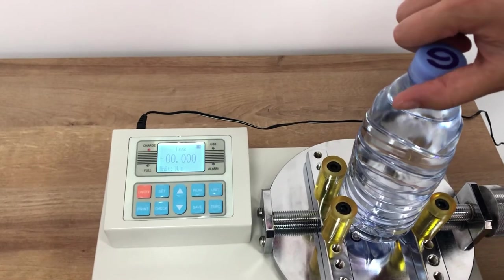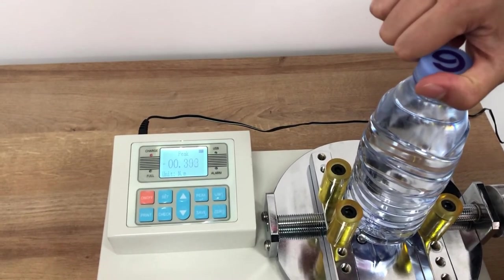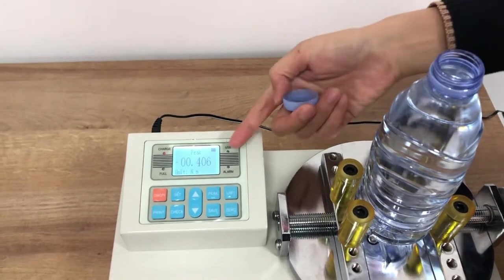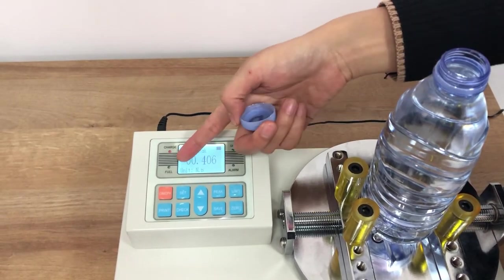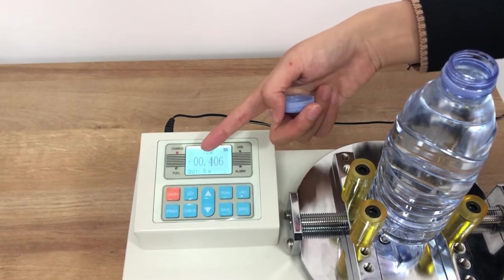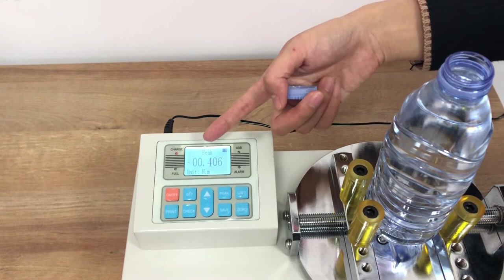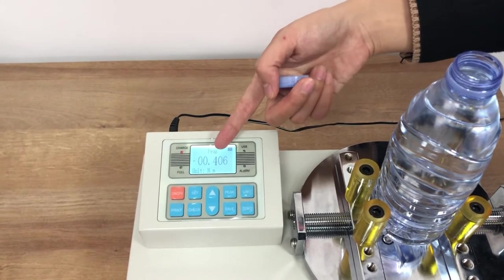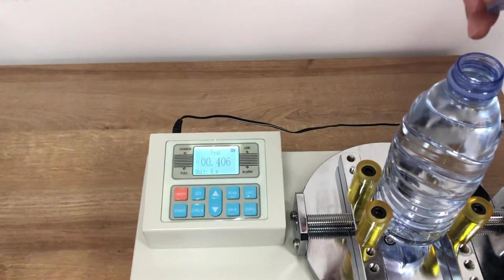We adjust the cap. Now it automatically saves the value. If you set the mini peak value over 0.5, it will not save automatically.